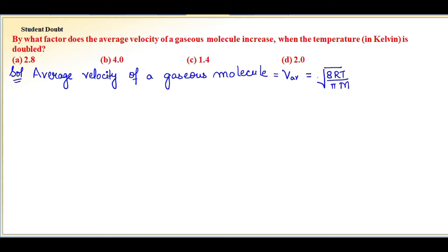This is the formula for average velocity of a gas molecule. Here, R is constant, π is constant, and since the gas is the same, molecular mass m is constant. Therefore, v_average is directly proportional to √T.